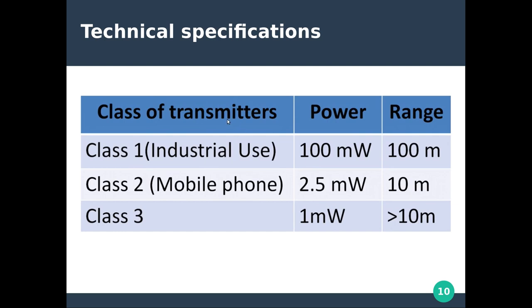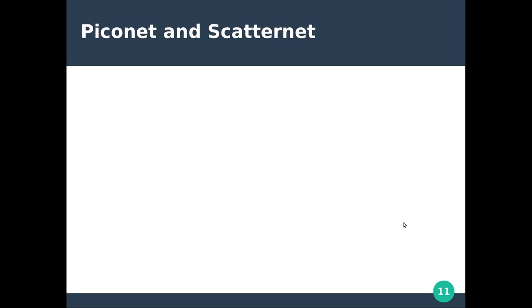Bluetooth is classified into three classes based on transmitter power. Class 1 is for industrial purposes, providing up to 100 meter range with maximum power of 100 milliwatts. Class 2, used in mobile phones, consumes only 2.5 milliwatts and provides a range up to 10 meters. Class 3 is used for wearable devices in body area networks, consuming only 1 milliwatt with a range greater than 10 meters.